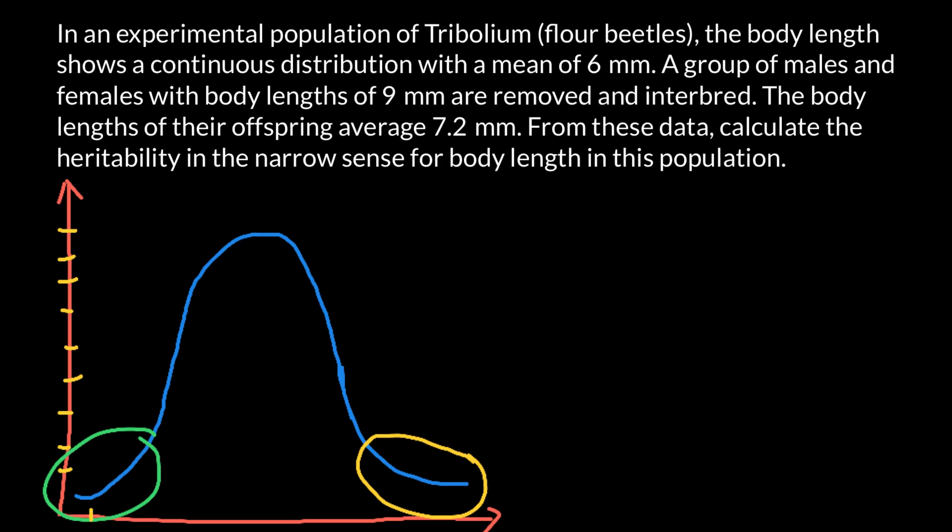Here is a distribution that shows frequency of the occurrence of a certain phenotype. And here, as in our case, would be the size. Very small and very tall would occur in population, but in small numbers. And most would be somewhere here, of the middle size. We call this the mean of the population or mean of the base population. According to our problem, the mean population is 6 millimeters.